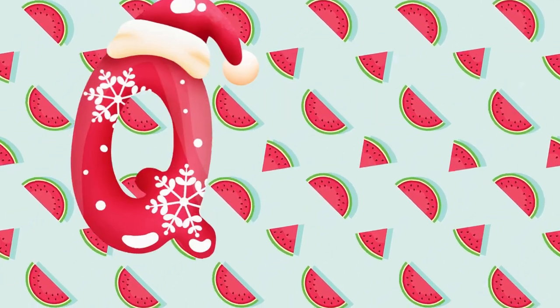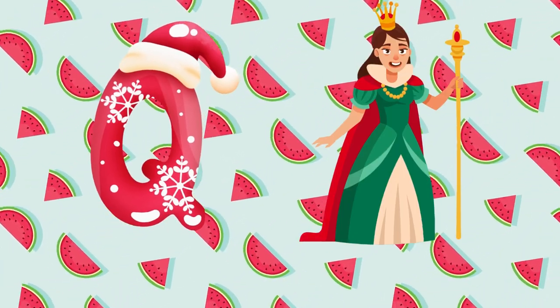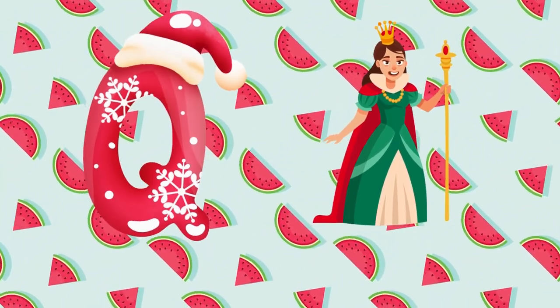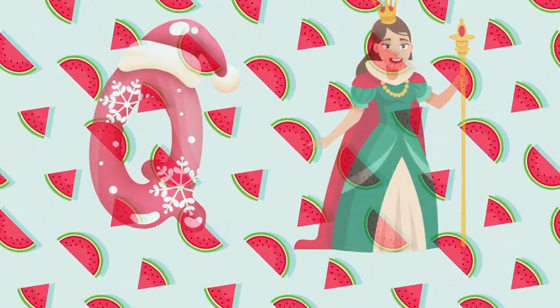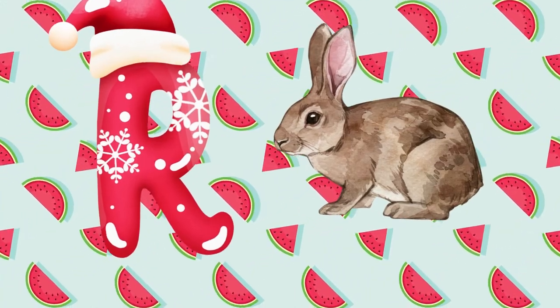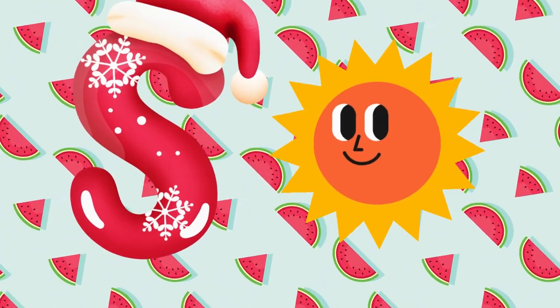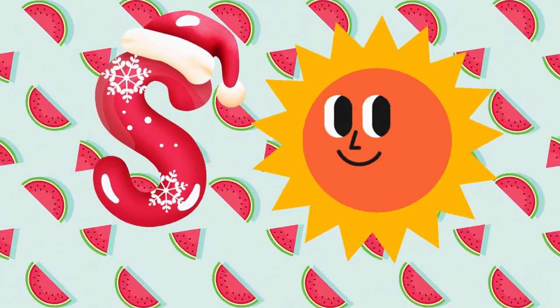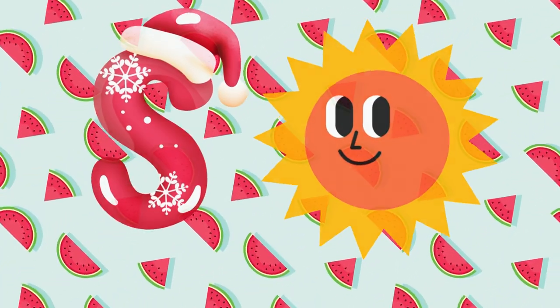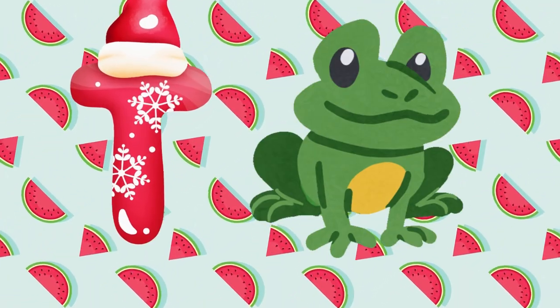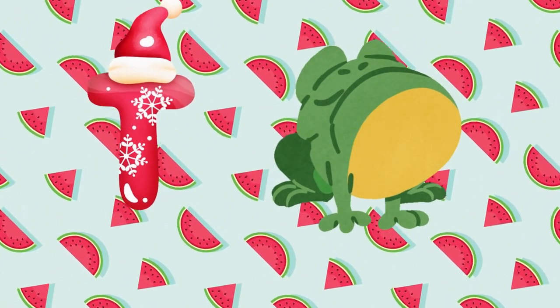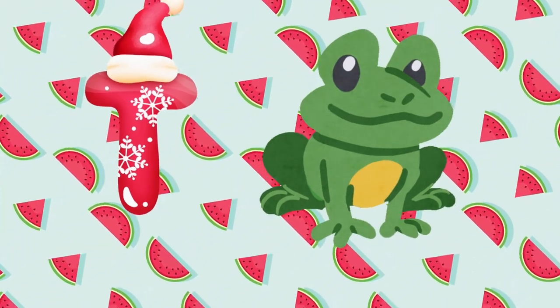Q is for queen, k-k-queen. R is for rabbit, r-r-rabbit. S is for sun, s-s-sun. T is for toad, t-t-toad.